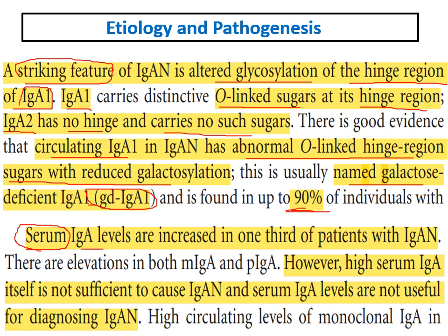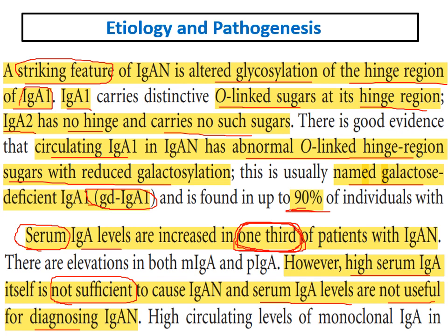Regarding serum IgA levels: they are increased in only one third of patients with IgA nephropathy. This is a very important point — high serum IgA alone is not sufficient to cause IgA nephropathy, and serum IgA levels are not useful for diagnosing IgA nephropathy. We do not rely on serum IgA levels to make this diagnosis.